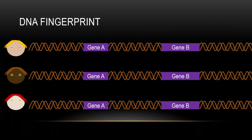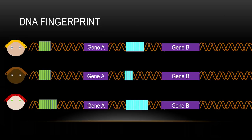If you look at the gene, each box represents a repeat. Sometimes two people have the same number, and sometimes they have different numbers. You basically just count the number of repeats.